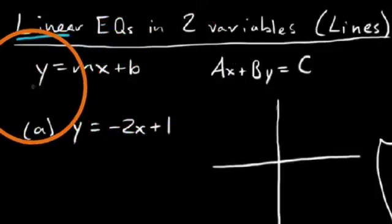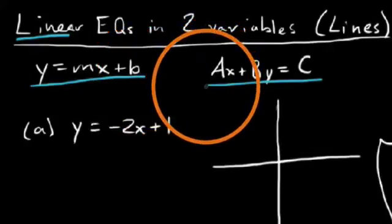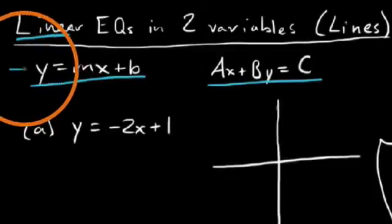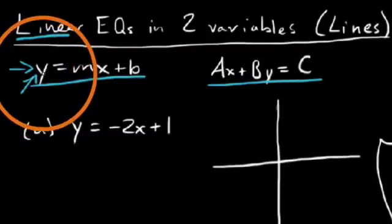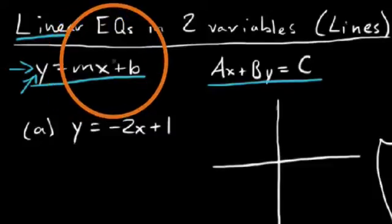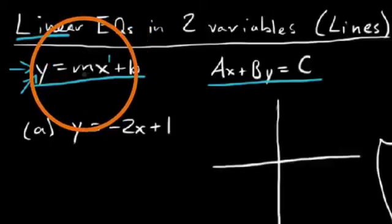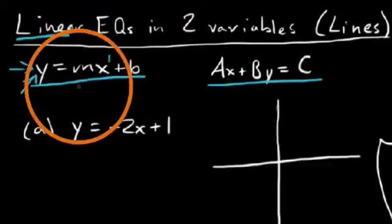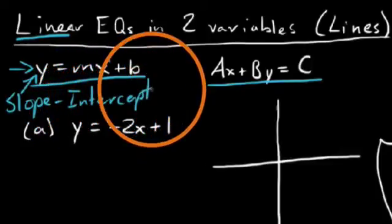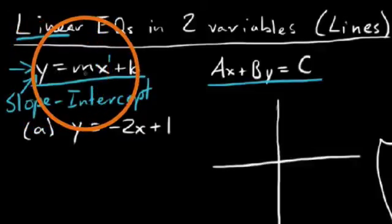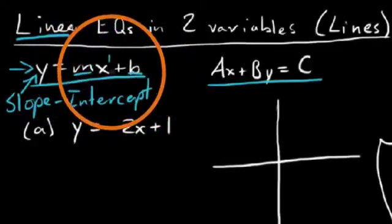You're going to notice at the top of what I've written, I've written two different forms that are both lines, but two different forms of an equation. Starting with the one on the left, you'll notice that y is already isolated on the left-hand side, and we have x on the right. X being to the first power tells us this is a first-degree polynomial — it's linear. You'll notice a couple of other letters here: m and b. This is referred to as the slope-intercept form of a line, and m and b represent the slope and the y-intercept, respectively.